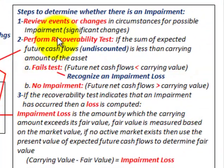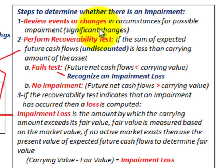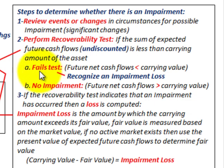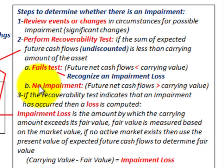To summarize the steps to determine whether there is an impairment: Step one, review events or changes in circumstances for possible impairment — these would have to be significant changes. Step two, perform the recoverability test. If the sum of expected future cash flows, undiscounted, is less than the carrying amount of the asset, it fails the test. If it fails, an impairment loss is recognized; if the future net cash flows are greater than the carrying value, there is no impairment.